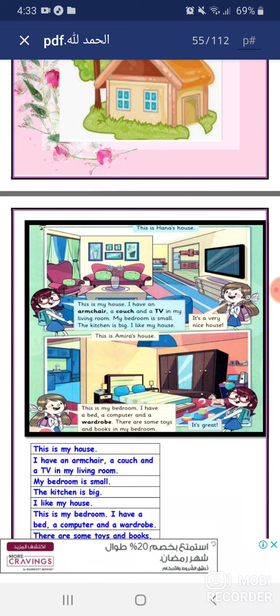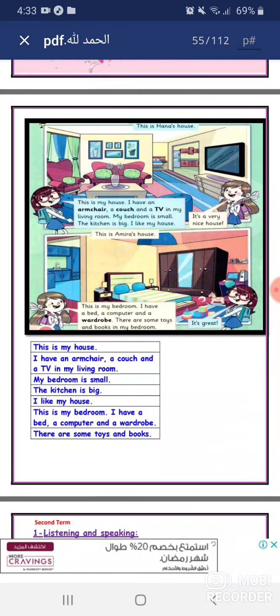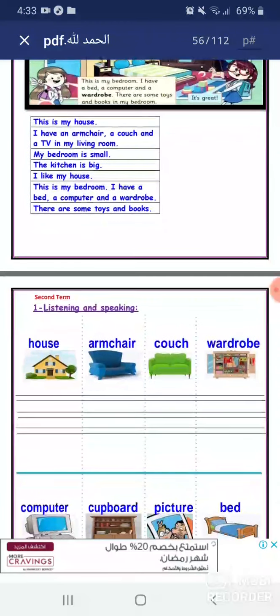This is Amira's house. This is my bedroom. I have a bed, a computer, and a wardrobe. There are some toys and books in my bedroom.